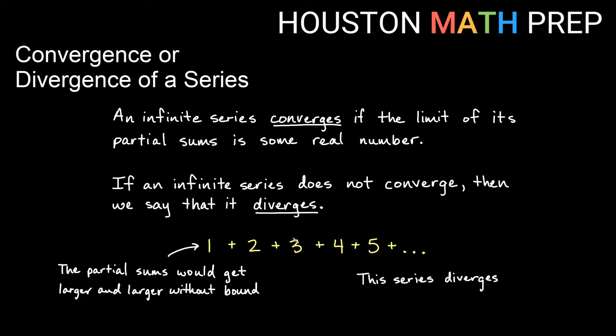You can look at my series here, 1 plus 2 plus 3 plus 4 plus 5. If I kept going forever, not only am I adding numbers that are getting bigger, I'm adding an infinite number of them. This partial sum would just get larger and larger. It would have no boundary, so we would say that this series diverges. This is nothing like the series before where the partial sums just kept getting closer and closer to 1. These partial sums would just get larger and larger beyond anything that we can count.